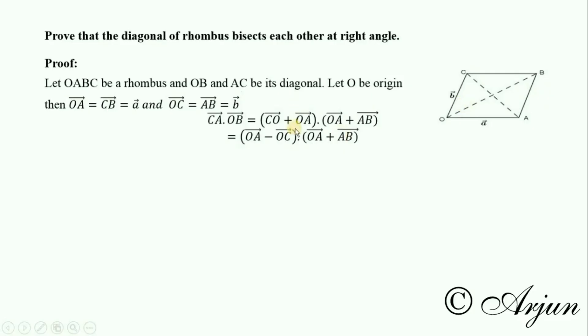Rearranging: OA as is, CO becomes minus OC. So we have (OA minus OC) dot (OA plus AB). With OA as vector a and OC, AB as vector b, this becomes (a minus b) dot (a plus b), which equals a squared minus b squared.